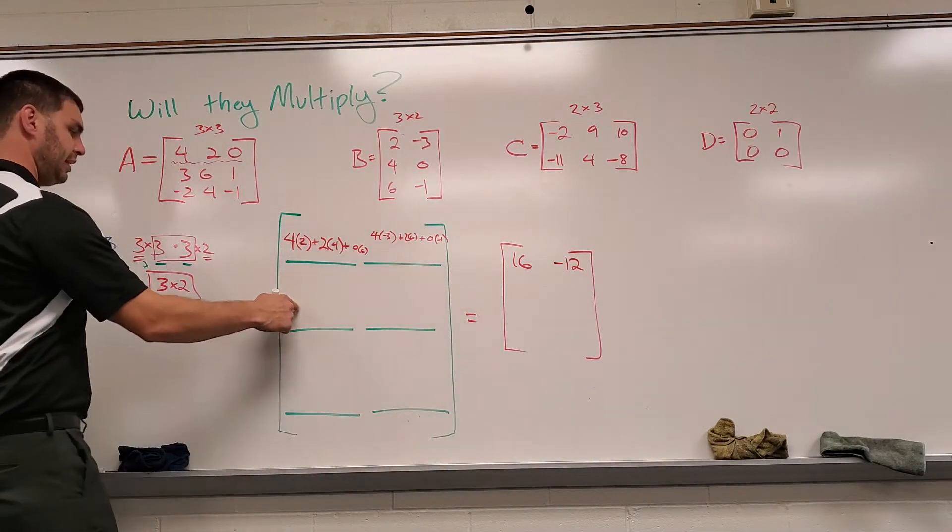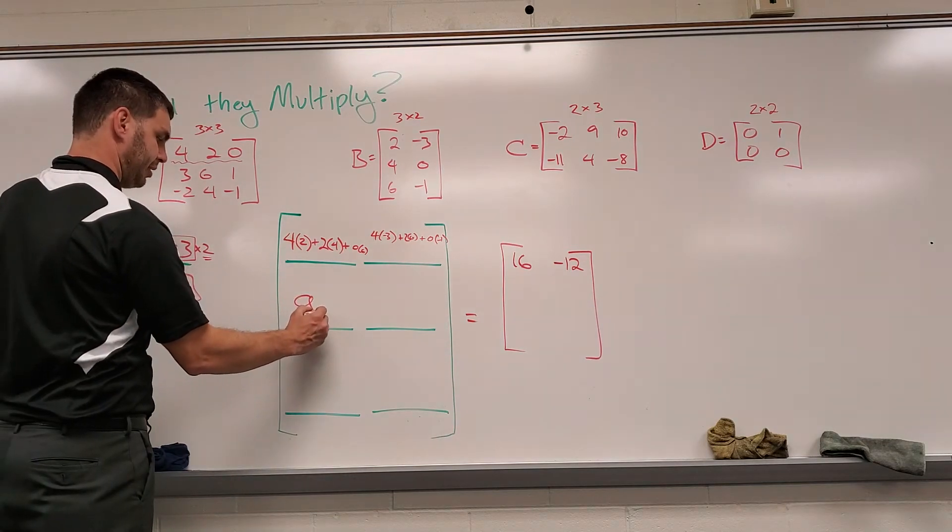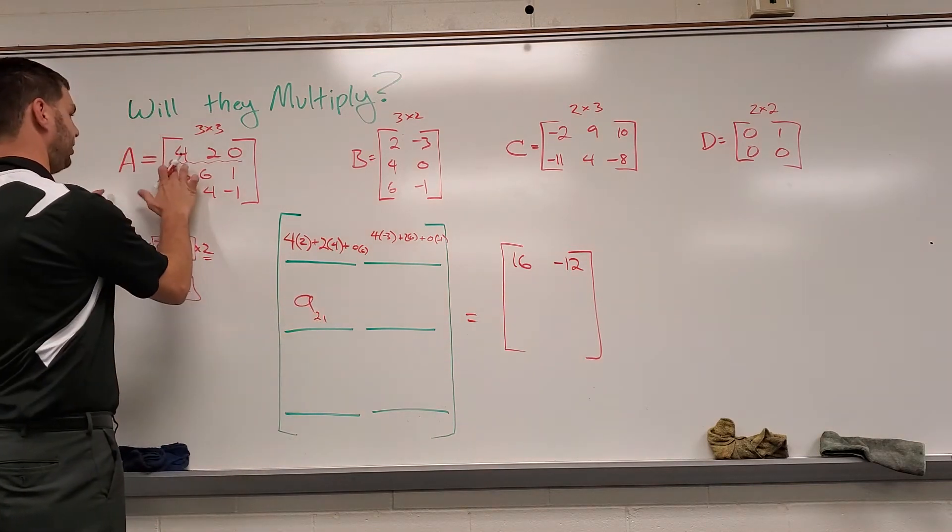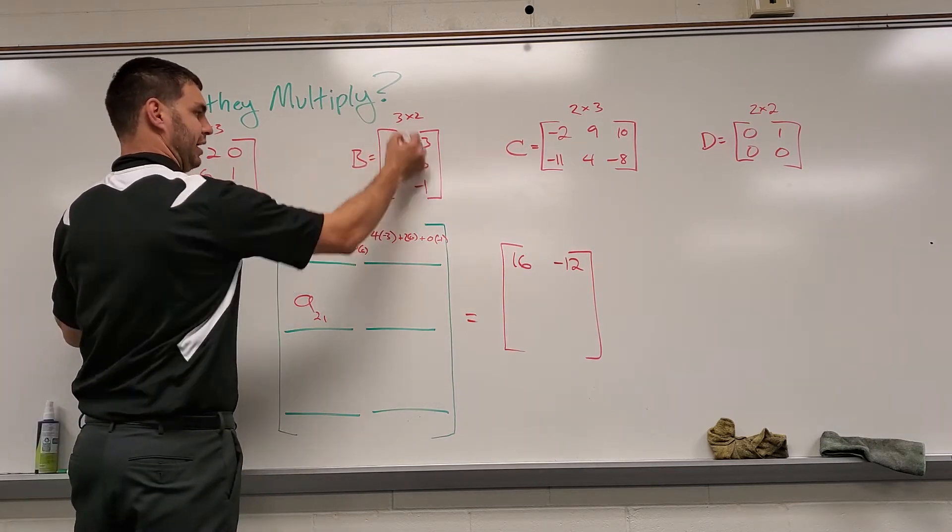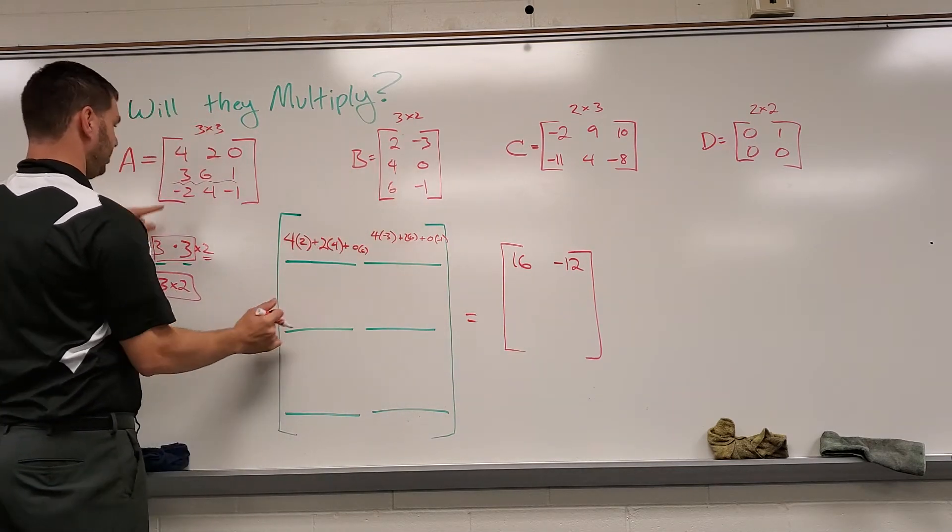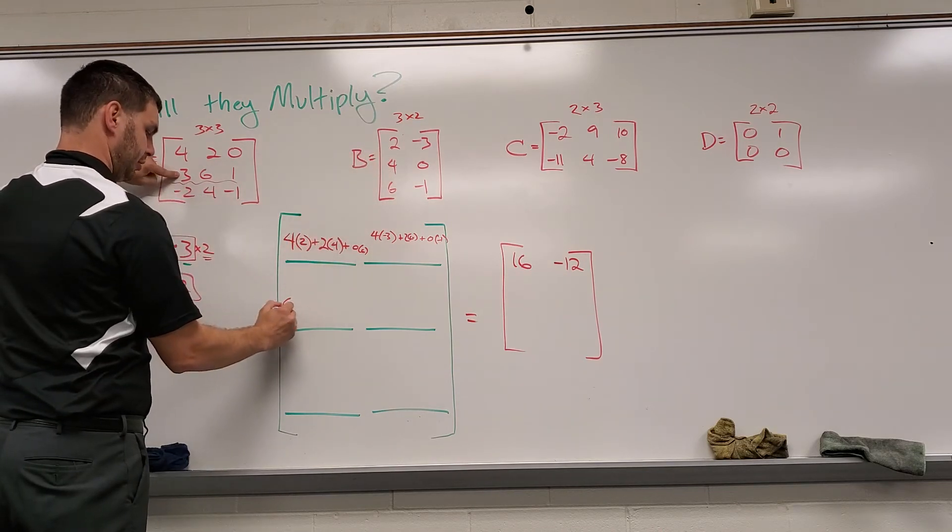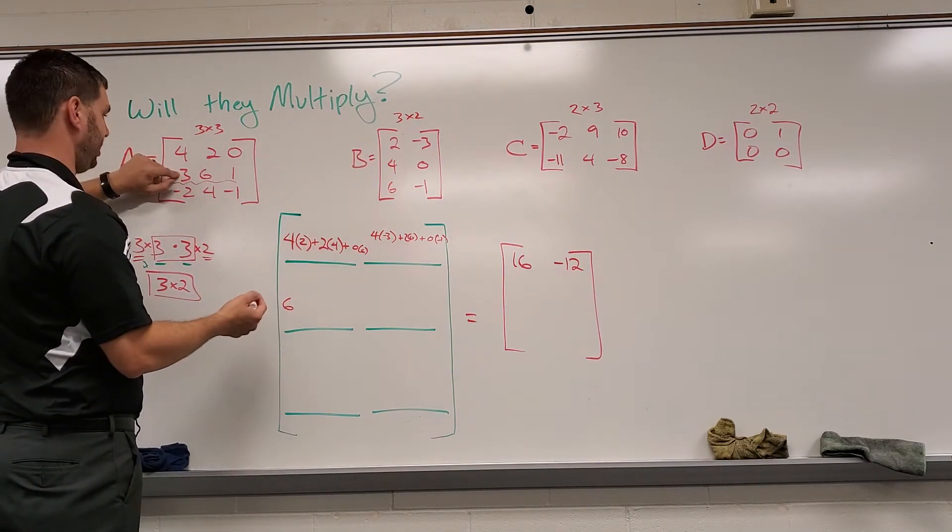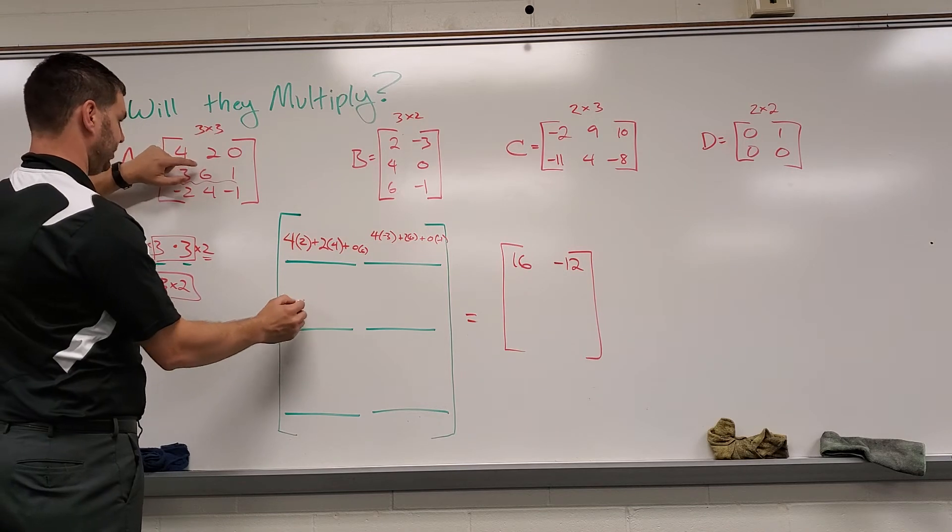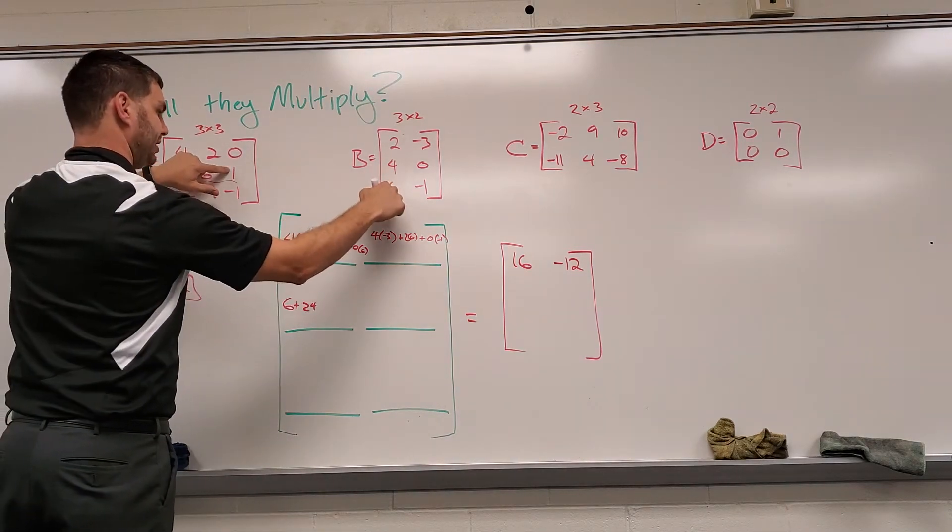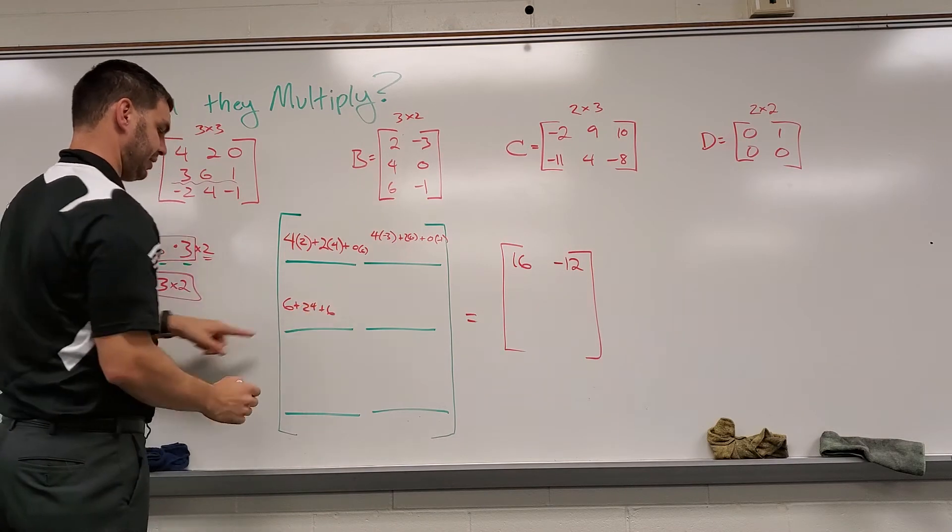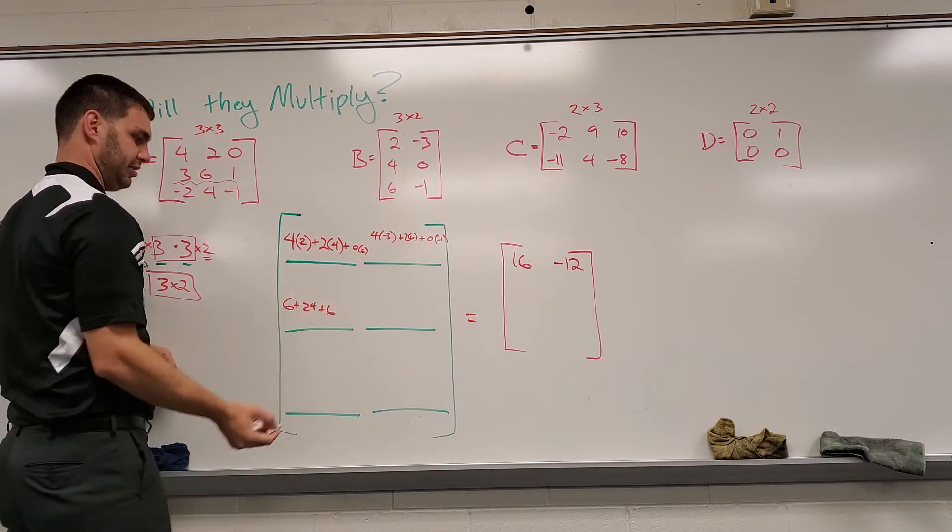Moving along. So this is going to be A sub two one. So now I'm going to go to my second row, multiply it times my first column. And here we have three times two, which is six. I might just do the math in my head a little bit. Plus six times four is 24. And then one times six is six. Six plus 24 is 30. 30 plus six is 36.